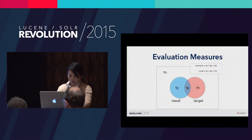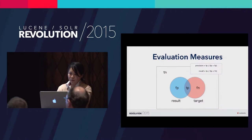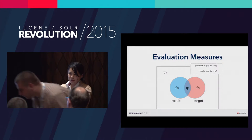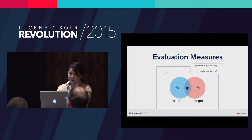In terms of these measures, we as users of a search engine want high performance — where both precision and recall are high. However, it is hard to support high precision and recall at the same time. This problem is the well-known trade-off between precision and recall.